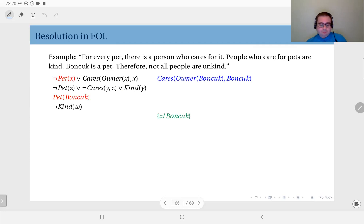First of all, ¬Pet(x) and Pet(Bonjuk)—as you see, they are complements through the substitution x → Bonjuk. If you substitute Bonjuk into x (x is a variable, Bonjuk is a value), you unify these two literals using this substitution. What you end up with is Cares(Owner(Bonjuk), Bonjuk). Then you resolve these two again. You will use the substitution z → Bonjuk, so these two will disappear. What you have is—do not forget, wherever you see z you have to put Bonjuk—so this becomes ¬Cares(y, Bonjuk) ∨ Kind(y).